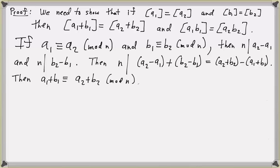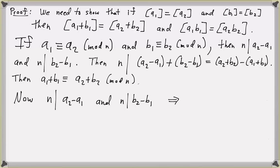Now we need to show that multiplication is well defined. We're assuming that n divides a2 minus a1, because a1 and a2 are congruent, and we know that n divides b2 minus b1. So by definition of divisibility, a2 minus a1 is an integer multiple of n, and b2 minus b1 is also an integer multiple of n. Let's say a2 minus a1 equals ns and b2 minus b1 equals nt for some integers s and t.